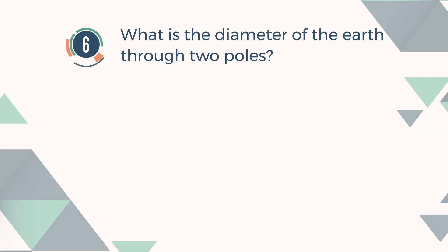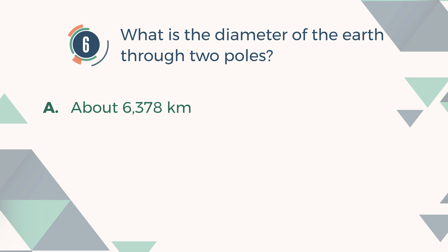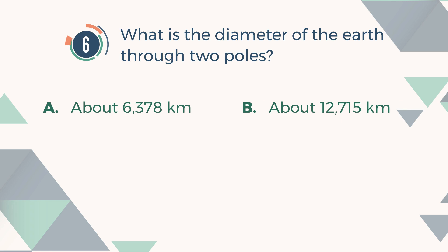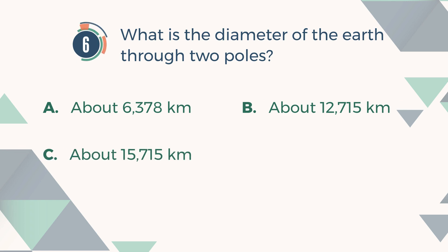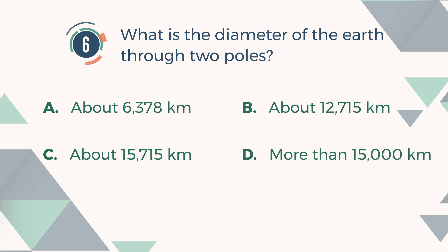Number 6. What is the diameter of the Earth through two poles? A. About 6,378 kilometers. B. About 12,715 kilometers. C. About 15,715 kilometers. D. More than 15,000 kilometers.